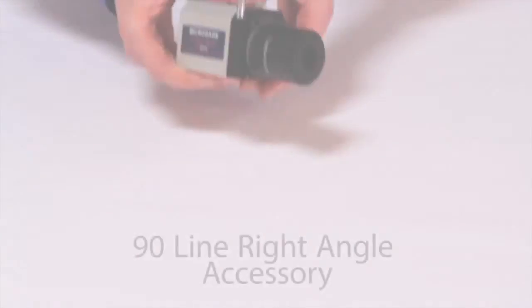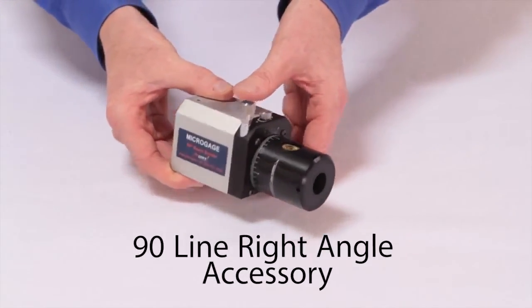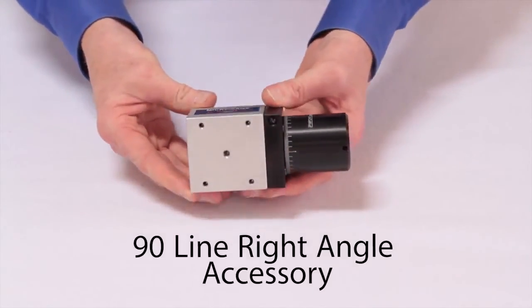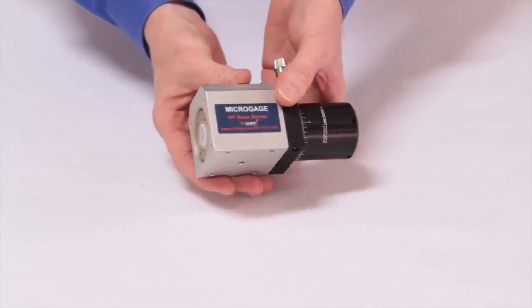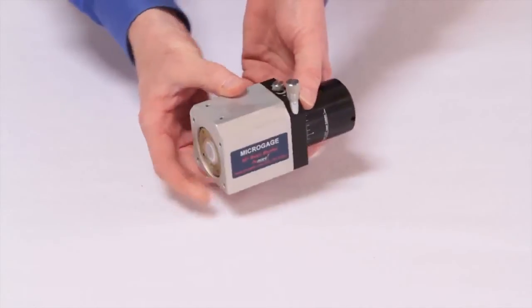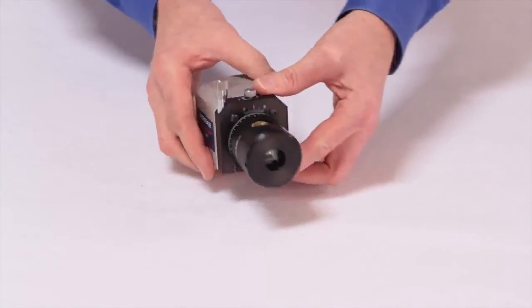Our 90-degree right angle accessory is machined from a solid block of aluminum and has mounting holes on its external surfaces. The laser reference beam enters the front of the nose piece and passes through an optical pentaprism.